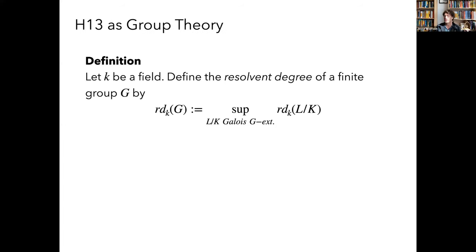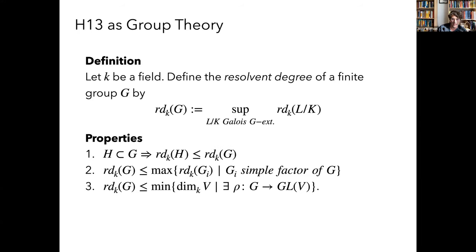That's the first perspective — Galois theory — and we didn't solve the problem. So let's change viewpoint. A different perspective builds on work of Reichstein, Buhler, Jones, and Ovi, who said: let's hear this as a problem about group theory. You can define an invariant of a finite group by saying the resolvent degree of the group is the supremum of the resolvent degrees of all Galois G-extensions. This is in fact a finite number — it's at most the dimension of any faithful linear representation of the group. This reduces the problem to resolvent degrees of finite simple groups.